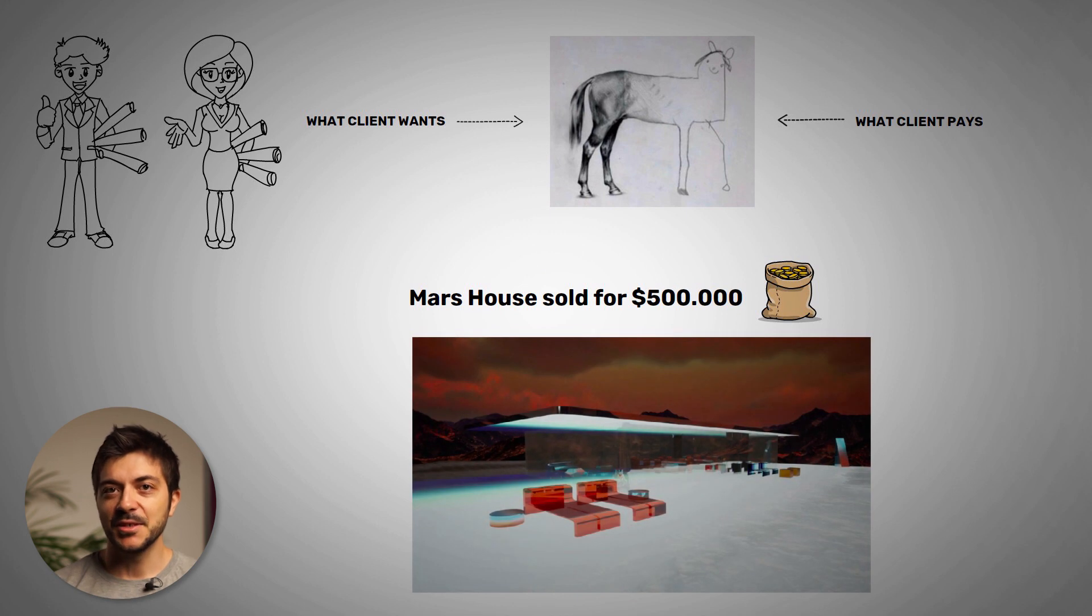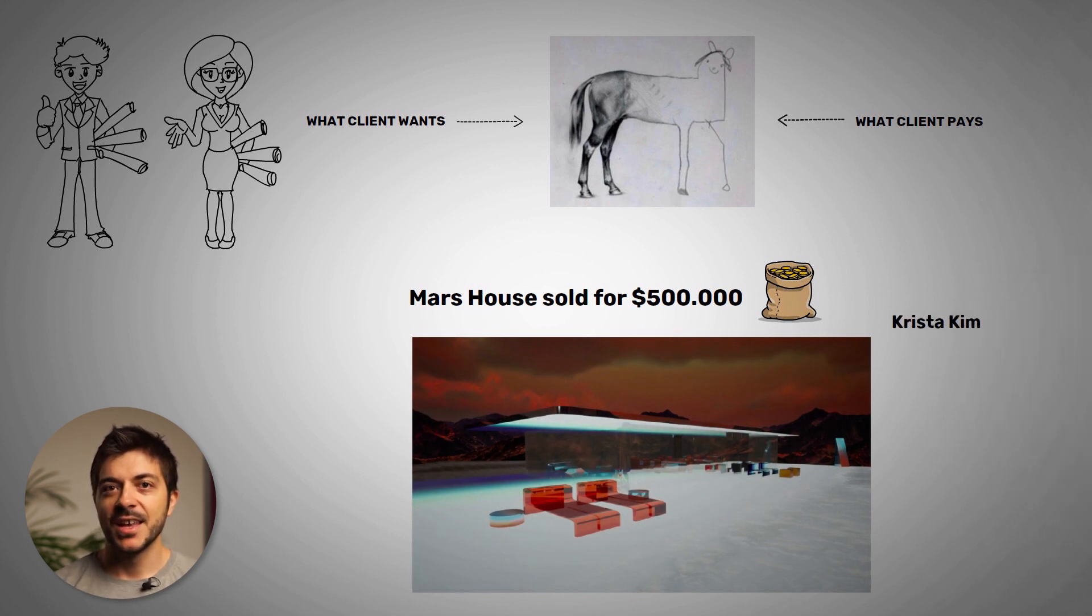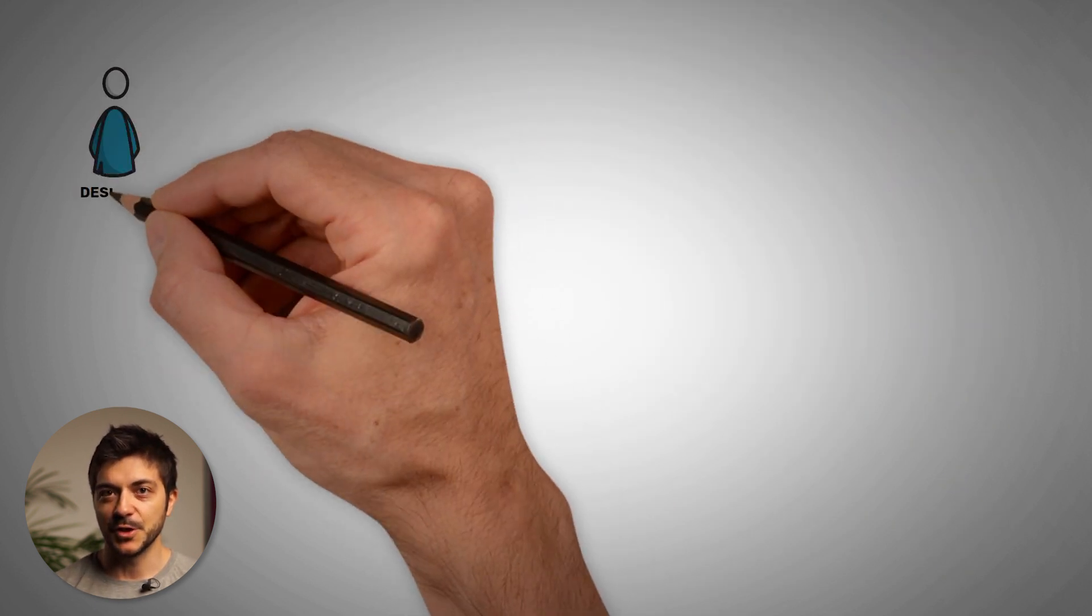Well that's exactly what happened earlier this year. Krista Kim who is a digital artist sold her Mars house as an NFT for this amount.